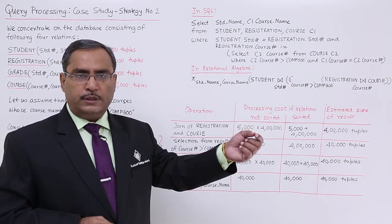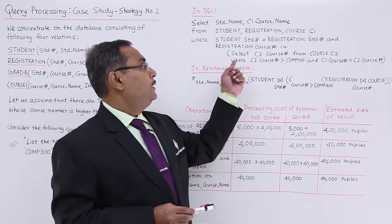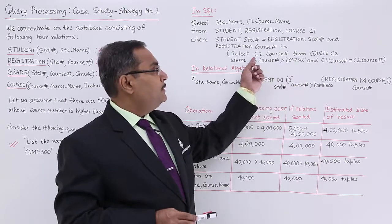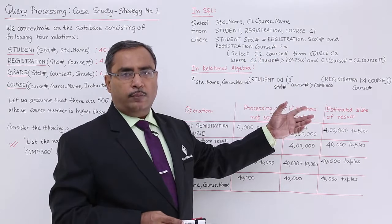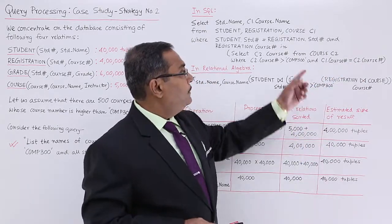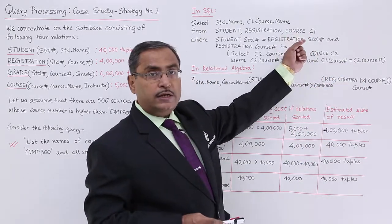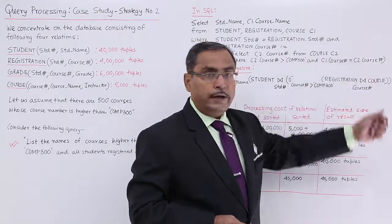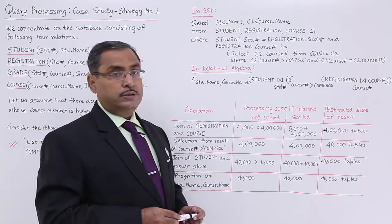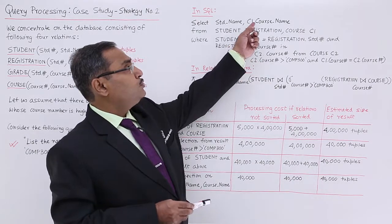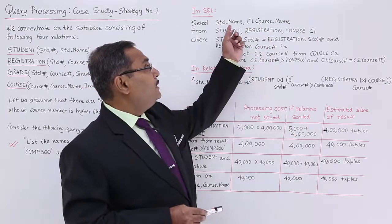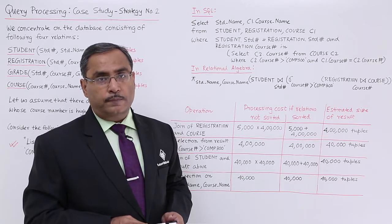We make another replica of course in memory named C2, where C2 dot course number is greater than COM 300. That means those course numbers are all greater than COM 300, which is required, and C1 dot course number must equal C2 dot course number. In this way, the query produces course names whose course numbers are greater than COM 300, along with the student name.